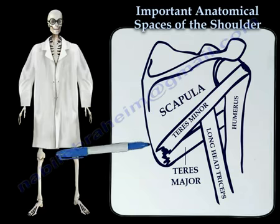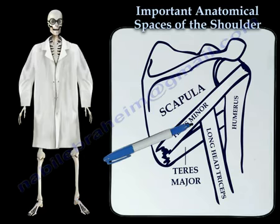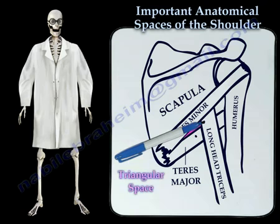The boundaries of the triangular space include the teres minor, the teres major, and the long head of the triceps.